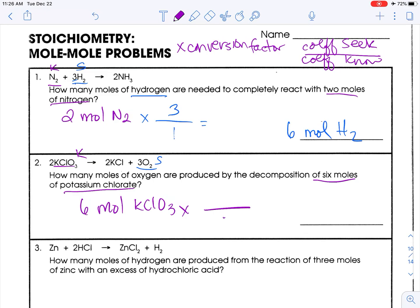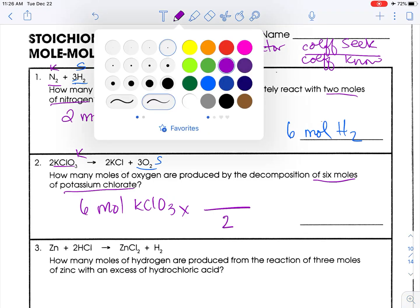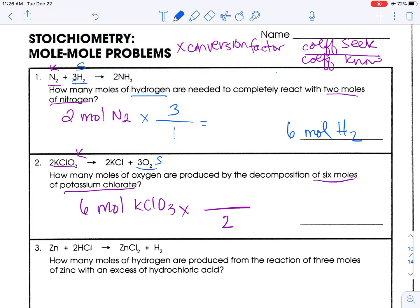Six moles potassium chlorate. The coefficient of that is two. That goes on the bottom. What I know is two. What I seek is three. My given is here. The coefficient of what I know goes on the bottom because I'm going away from it. What I seek is up top. Six times three is eighteen divided by two is nine moles of oxygen now.